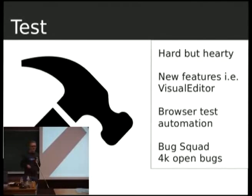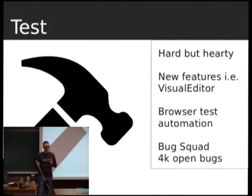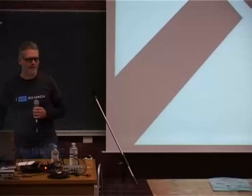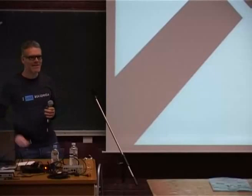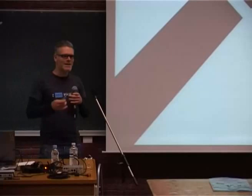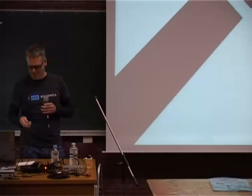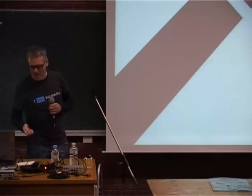We have more than 4,000 bugs — not all of them are for English Wikipedia, but we have plenty of bugs: fresh, old, for everybody. So just join in, search one that you like, look around, help testing it, help fixing it. Really appreciate it.